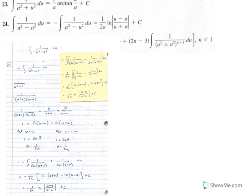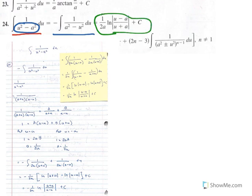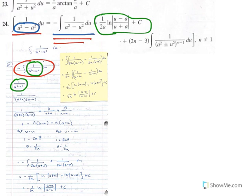We begin with the indefinite integral of 1 over (u squared minus a squared) du. You can factor out a negative 1 from each term of the denominator, making it negative 1 times the indefinite integral of 1 over (a squared minus u squared) du. So how can we show that indefinite integral has the antiderivative shown in rule number 24? We use partial fraction decomposition.